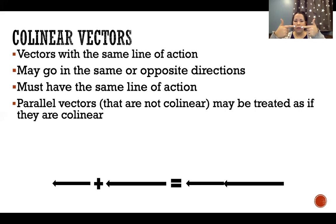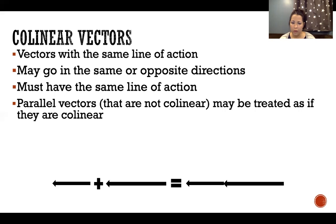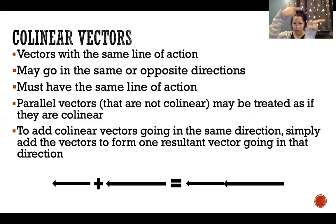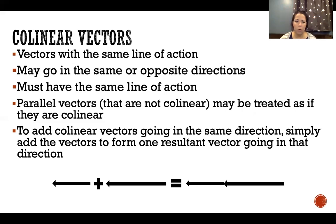If vectors are parallel but not collinear, they're going in the same direction and have the same orientation but are not on the exact same line. Parallel vectors, even if not collinear, can still be treated the same way. To add collinear vectors going in the same direction, all we have to do is add them together — stick one to the end of the other — and the resultant vector is just the length of the two added together.